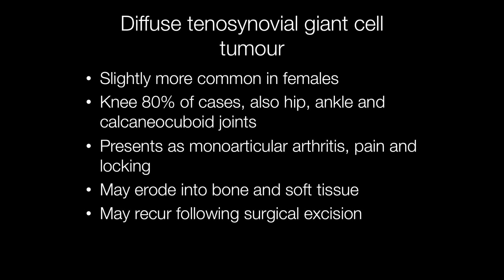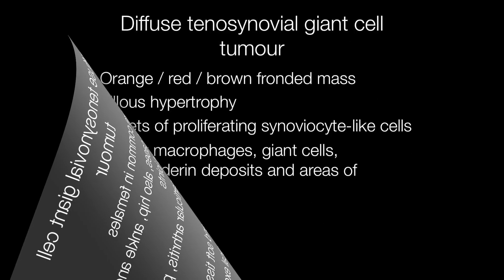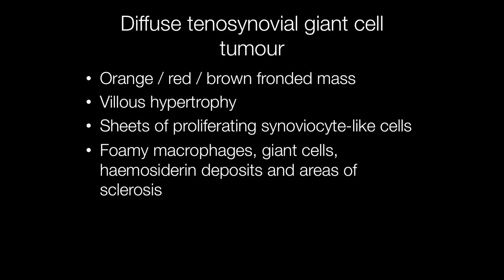The lesion may erode into bone and soft tissue, and importantly it may recur following surgical excision. The gross appearance is of an orange, red or brown fronded mass. Histologically there is villous hypertrophy, sheets of proliferating synovocyte-like cells with foamy macrophages, giant cells and haemosiderin deposits giving it the gold and brown appearance, and areas of sclerosis may also be seen.